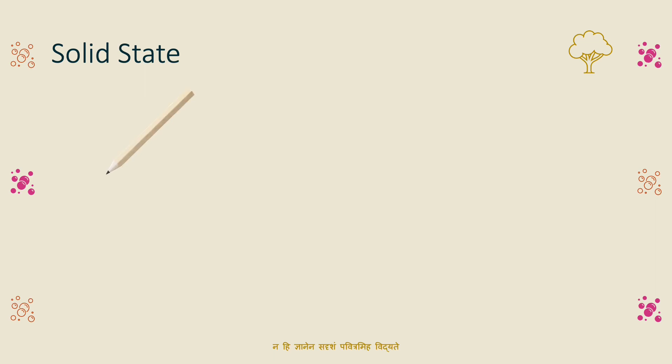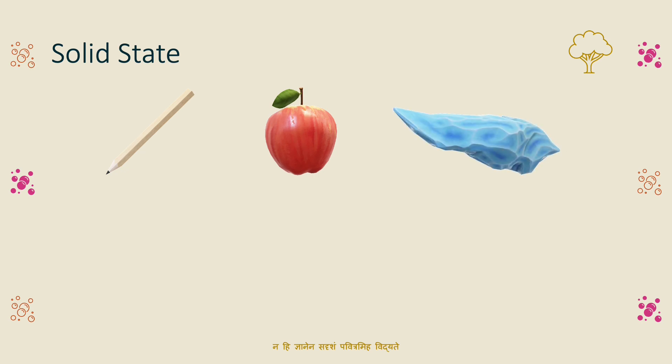The first state we will study is the solid state. Examples include a pencil, soap, ice, and glaciers. All of these are examples of the solid state. All these solid objects are stable for us — they remain stable when we keep them.